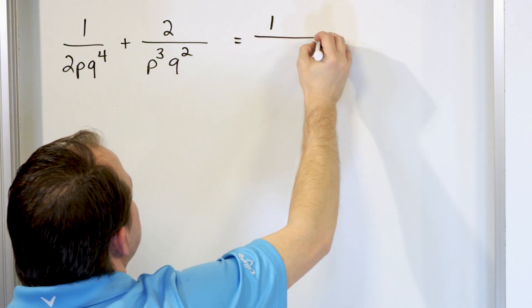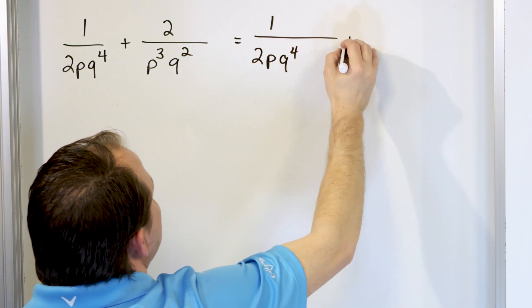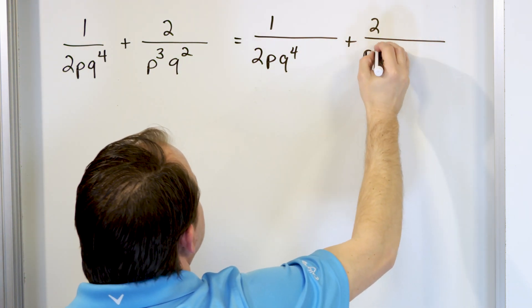So the first expression, we're going to write it with a slightly longer fraction bar. And then we'll add to that the second one with a slightly longer fraction bar.